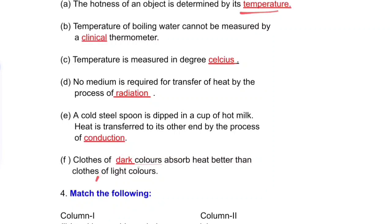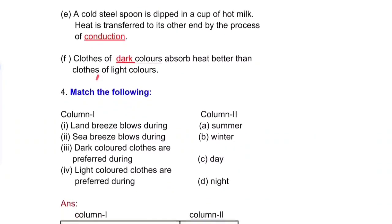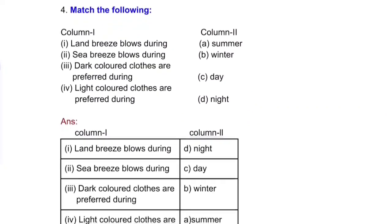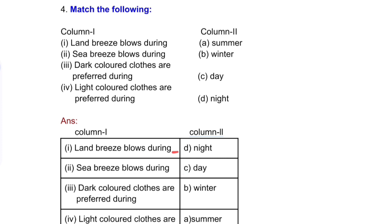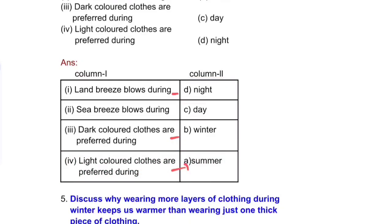Clothes of dark colors absorb heat better than clothes of light colors. Dark colored clothes are preferred during winter, and light colored clothes are preferred during summer, because dark colors absorb more heat.